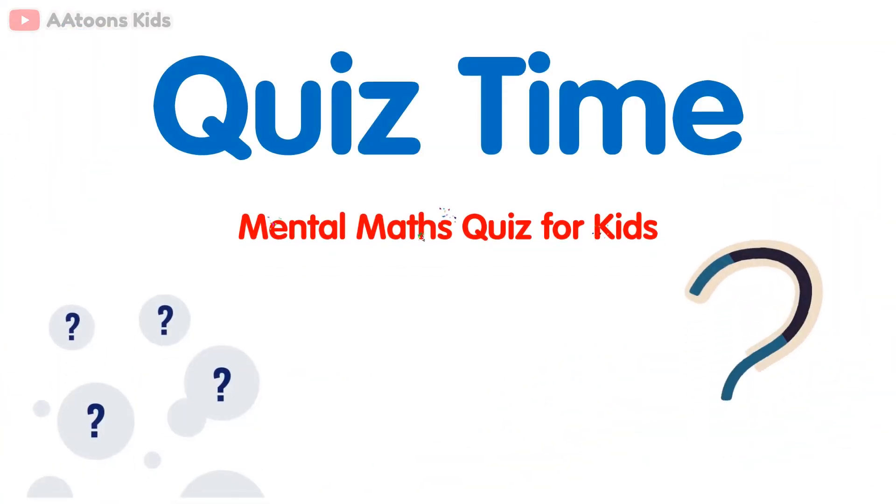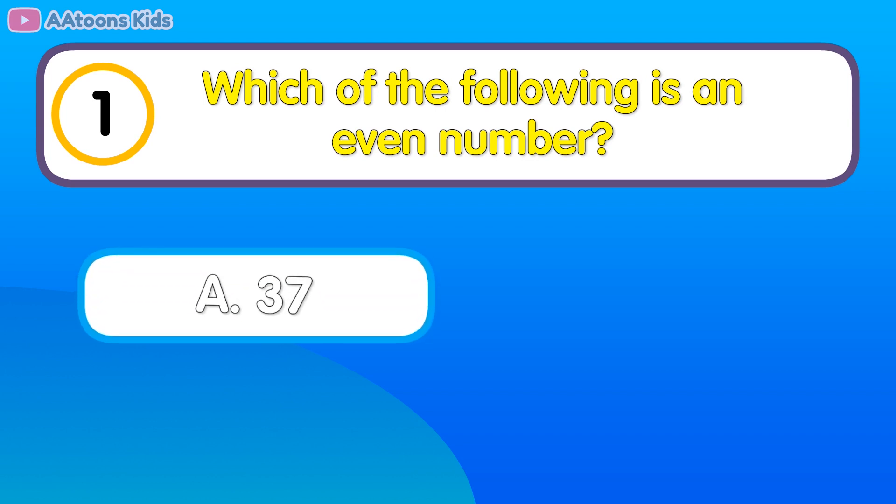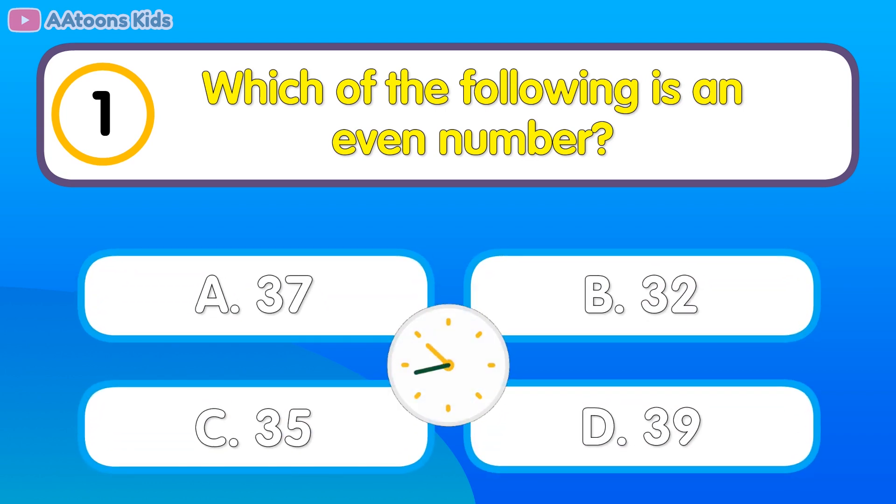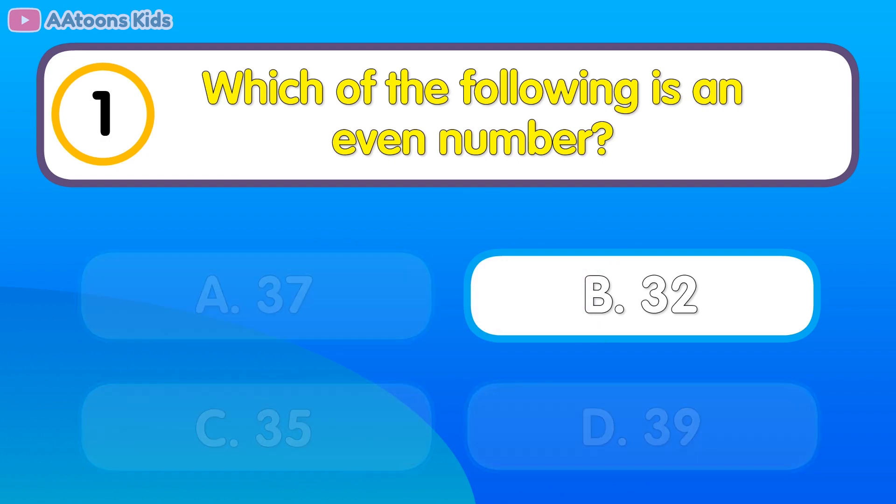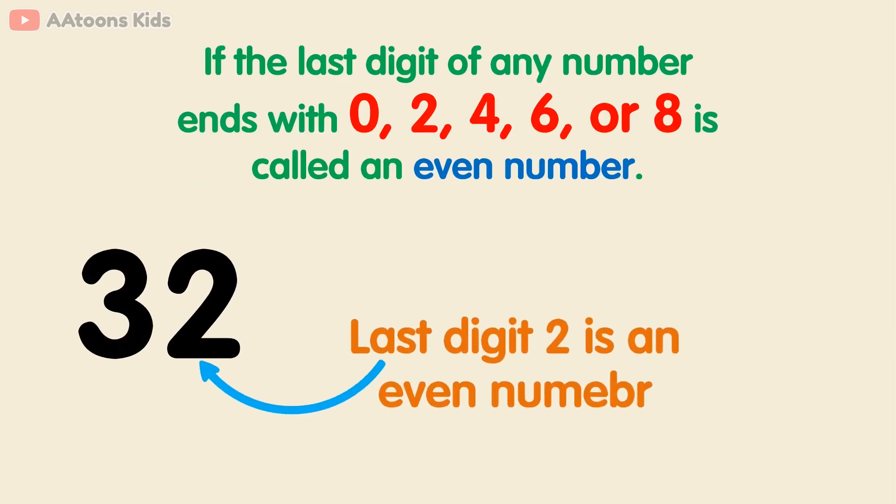Quiz time, mathematics quiz for kids. Which of the following is an even number? 32. If the last digit of any number ends with 0, 2, 4, 6, or 8, it is called an even number. In number 32, the last digit is 2, and 2 is an even number, so 32 is an even number.